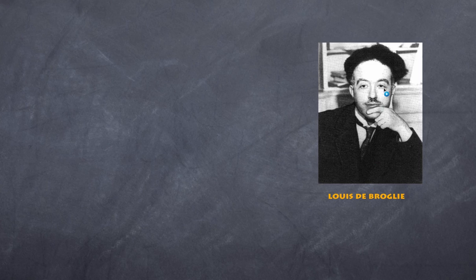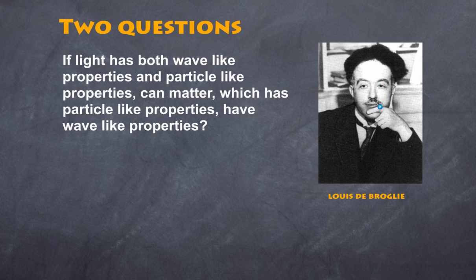So what did Louis de Broglie do? Well he asked two important questions. The first question he asked was: if light has both wave-like properties and particle-like properties, can matter which has particle-like properties have wave-like properties? Now you might remember 1905 Einstein's theory on the photoelectric effect showed that light can behave like waves of course, but in the photoelectric effect it showed it behaved like particles.